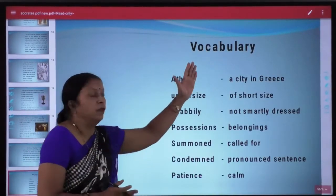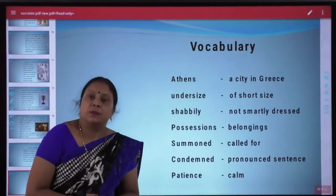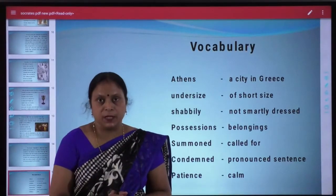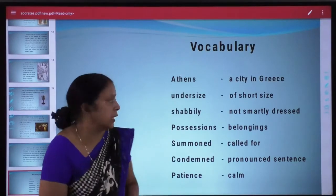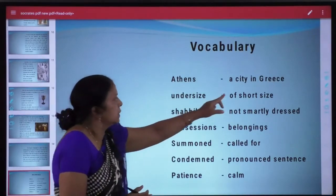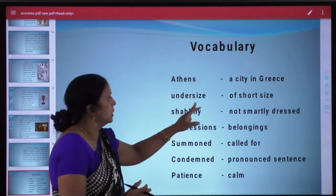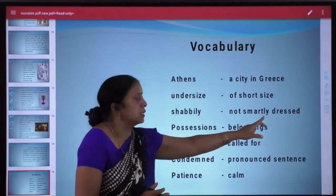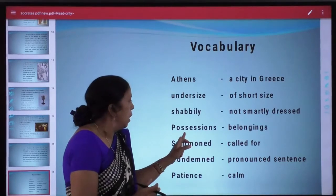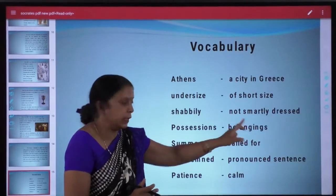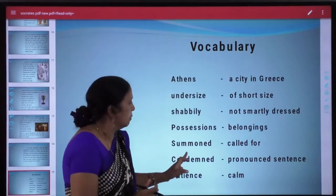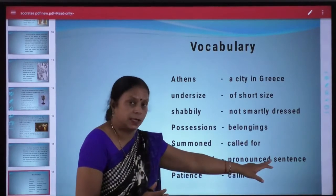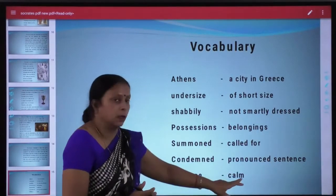Aayye baccho, hum vocabulary dekhte hain. Lesson padhne ke dauran kuch difficult words mile hain — aayye unka meaning jaan le. Athens — a city in Greece. Undersized — of short size. Shabbily — not smartly dressed. Possessions — belongings. Summoned — called for. Condemned — pronounced sentence. Patience — calm.